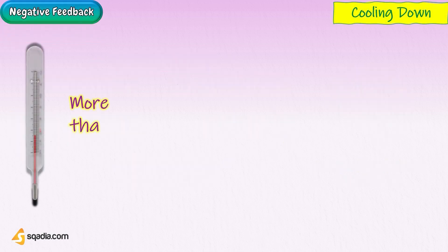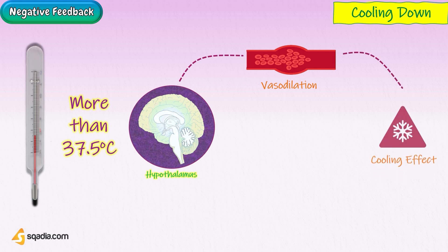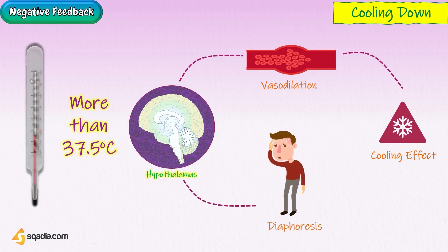The human body's temperature regulatory center is the hypothalamus in the brain. When the hypothalamus receives data from sensors in the skin and brain that body temperature is higher than the set point, it sets into motion the following responses: blood vessels in the skin dilate to allow more blood from the warm body core to flow close to the surface of the body, so heat can be radiated into the environment. As blood flow to the skin increases, sweat glands in the skin are activated to increase their output of sweat. When the sweat evaporates from the skin surface into the surrounding air, it takes the heat with it.